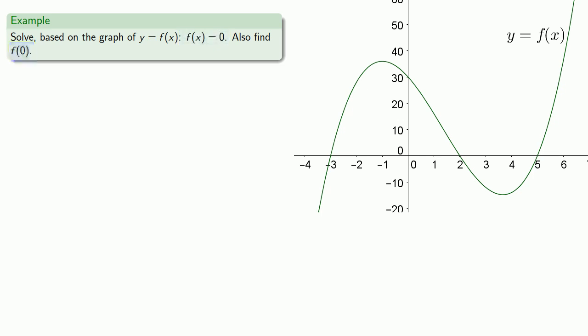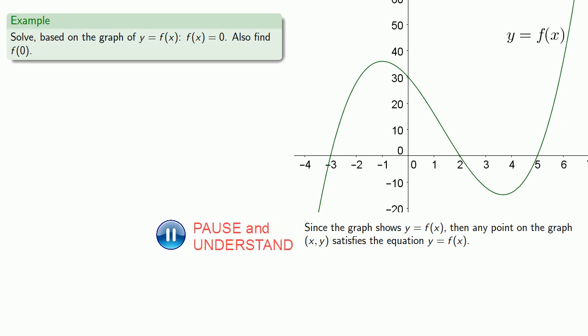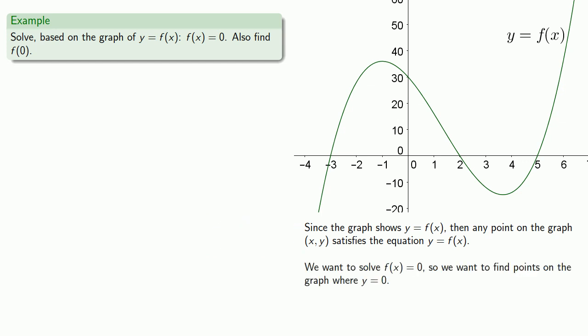So the thing to remember is that since the graph shows y = f(x), then any point on the graph (x, y) satisfies the equation y = f(x). We want to solve f(x) = 0. Equals means replaceable. For example, we want to find points on the graph where y = 0.